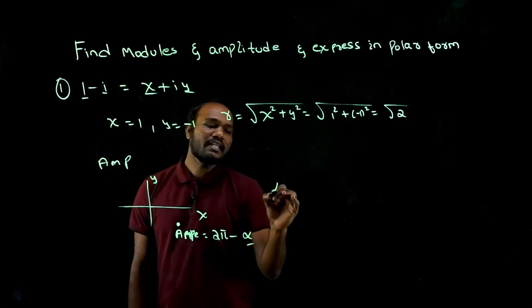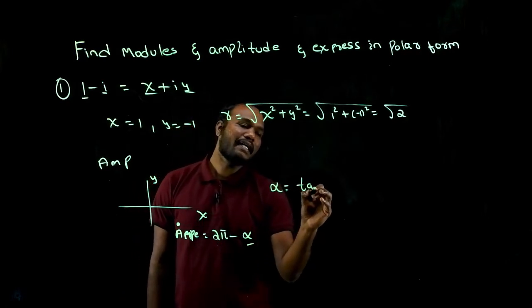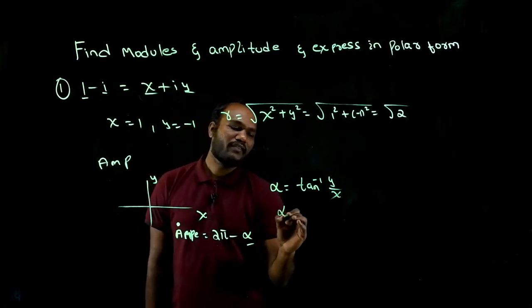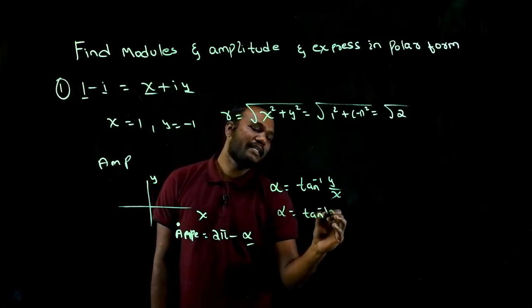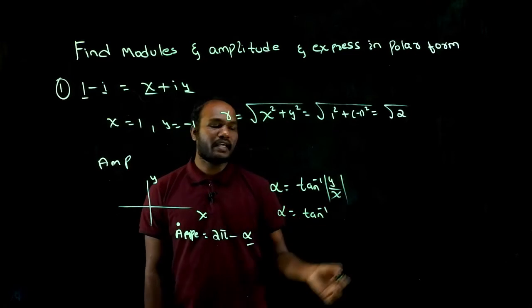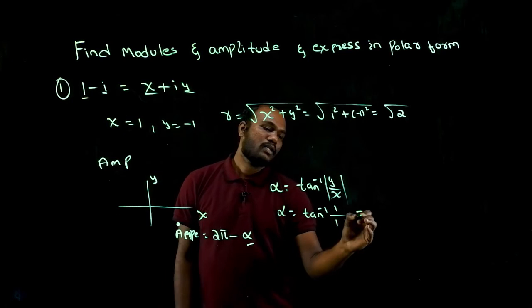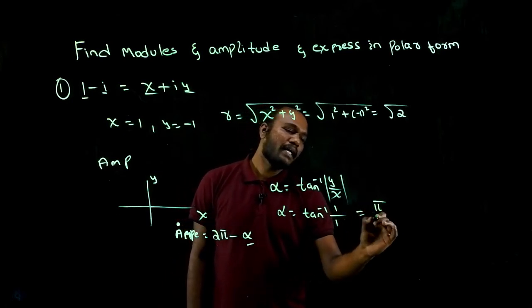So we need to find α. What is α? α is tan inverse of the magnitude of y upon x. So α equals tan inverse of 1 upon 1. Tan inverse 1 is π by 4.